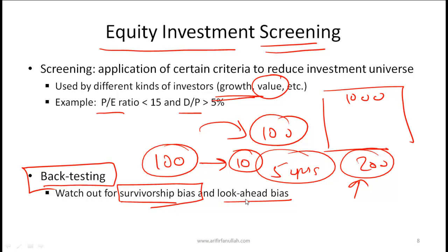The other bias to watch out for is look-ahead bias. This relates to the timing of data: many stocks in your financial database will have restated their financial numbers, and those restated numbers may differ from the numbers that were actually used by investors in the past to make investment decisions. Remember that look-ahead bias is one of the things you need to be concerned about when doing backtesting.